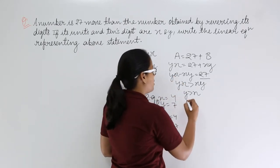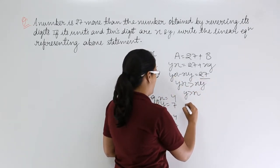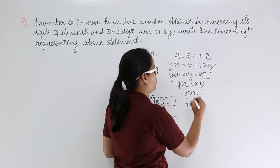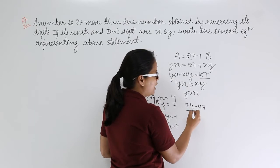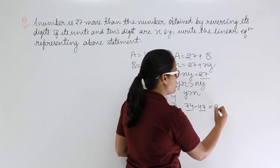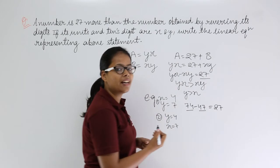Now for both of these conditions, let's see which condition is going to satisfy this equation. So let's put this value here where y is 7, x is 4, here x is 4, y is 7.